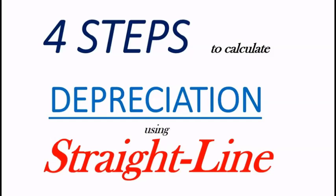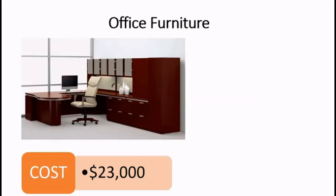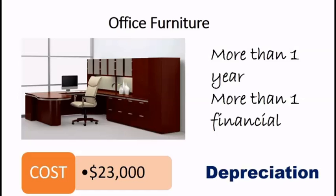In this video, I'll show you four steps to calculate depreciation using the straight-line method. Let's say a business buys office furniture for $23,000. The office furniture is a fixed asset — it will be around for more than one year, and so it will be on more than one annual financial statement. That's where depreciation comes into the picture. We're going to depreciate this office furniture.